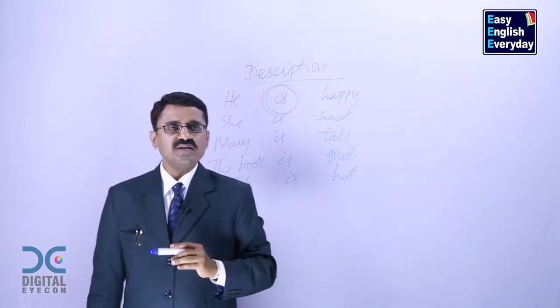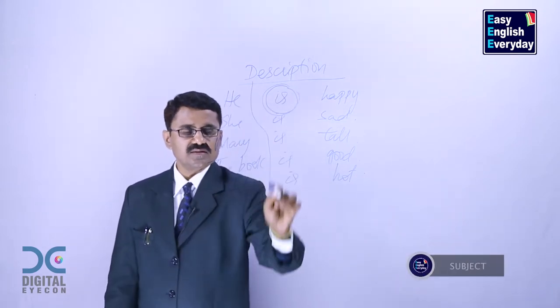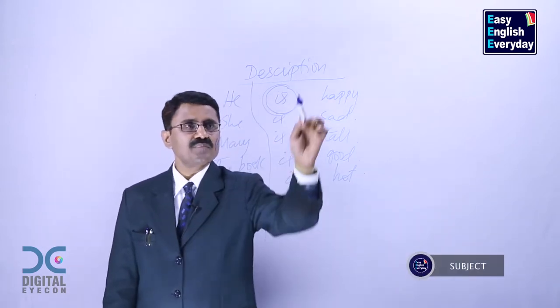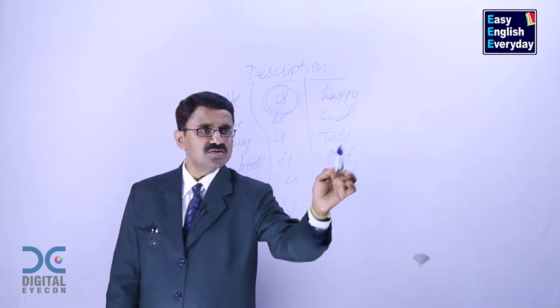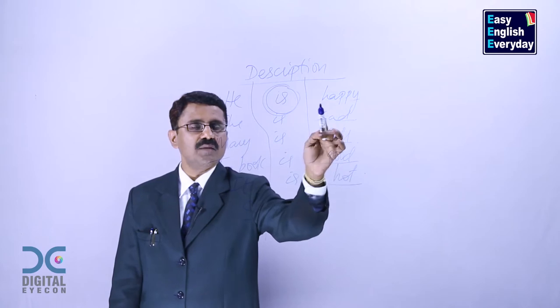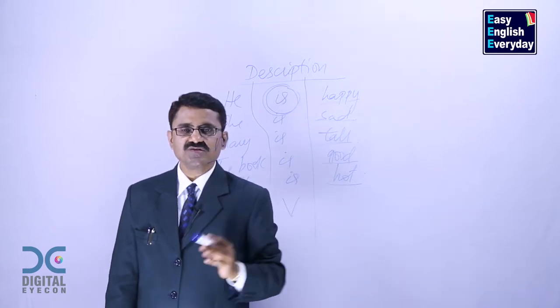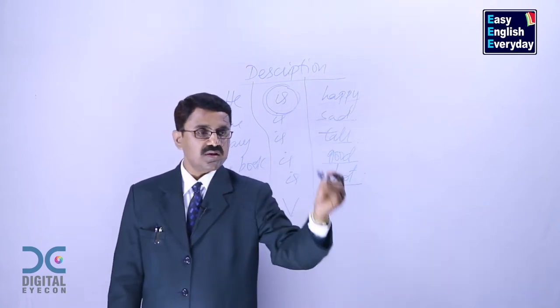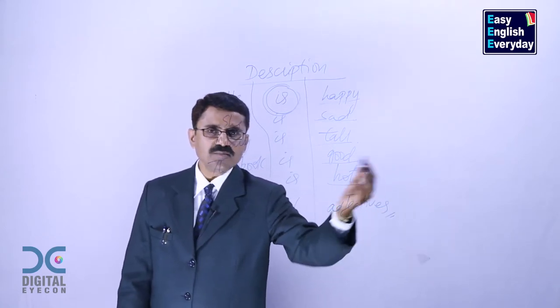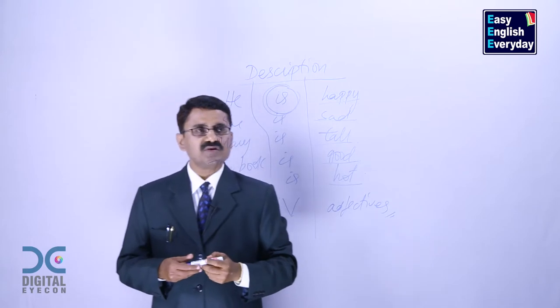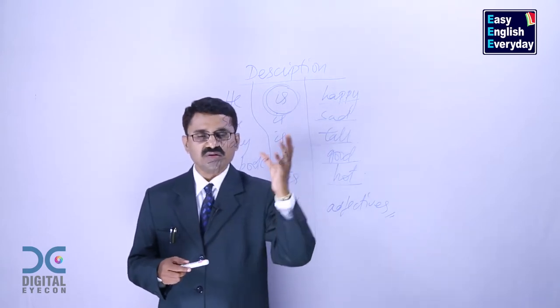How did we make the sentences? Take a subject. Take a verb. Hot, good, tall, sad, happy. These are some words in English language. Grammar calls them adjectives.